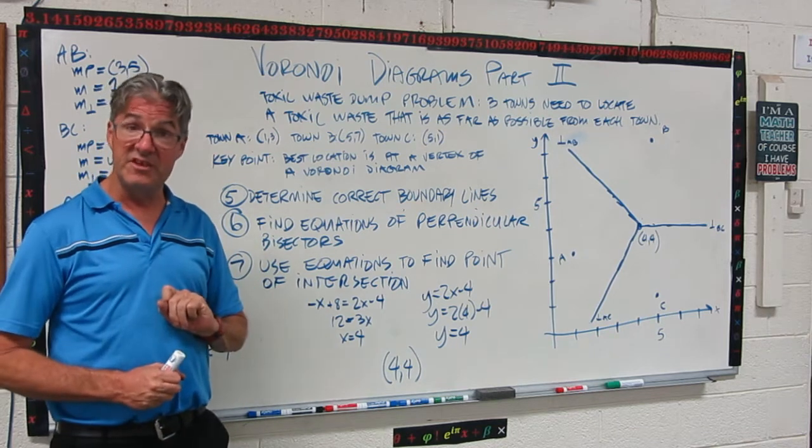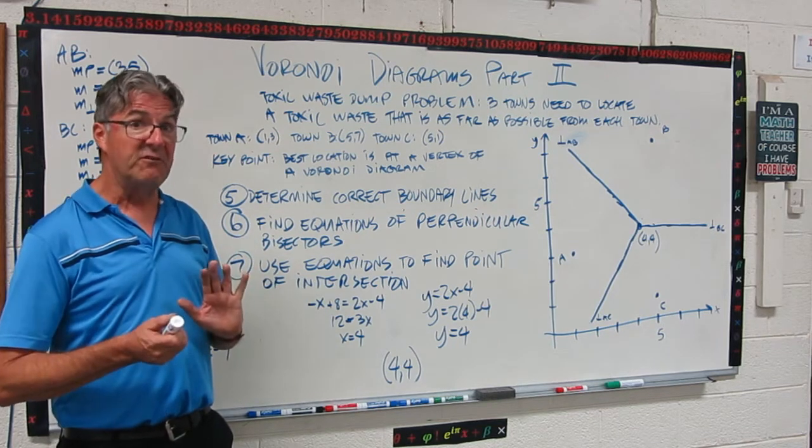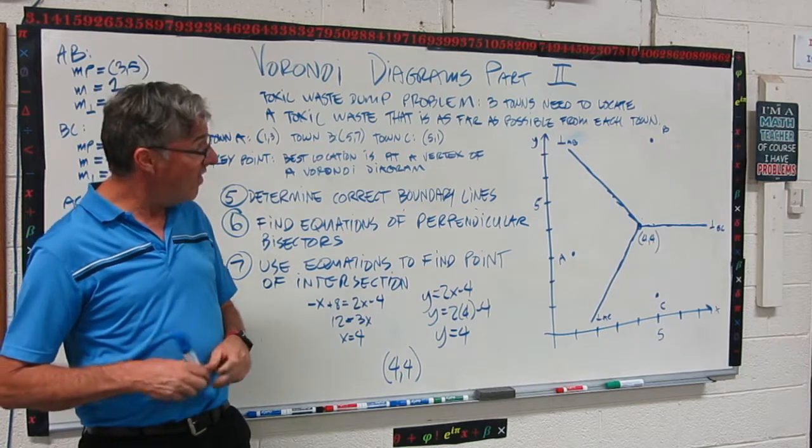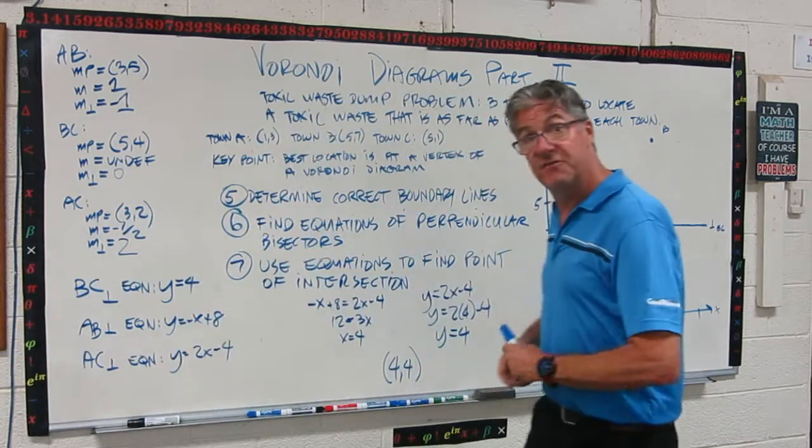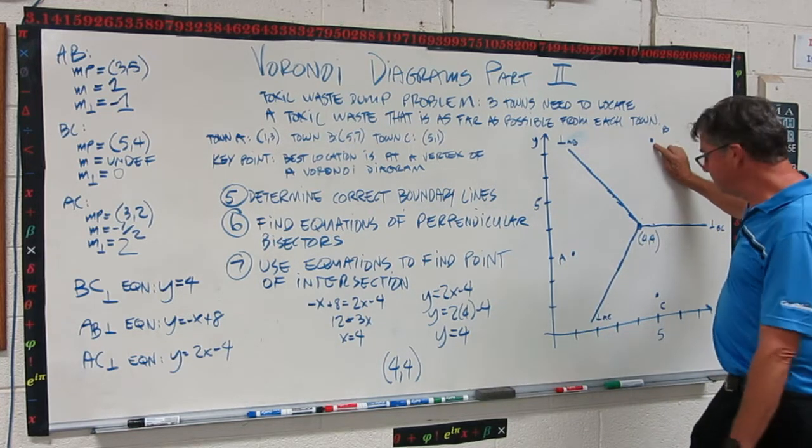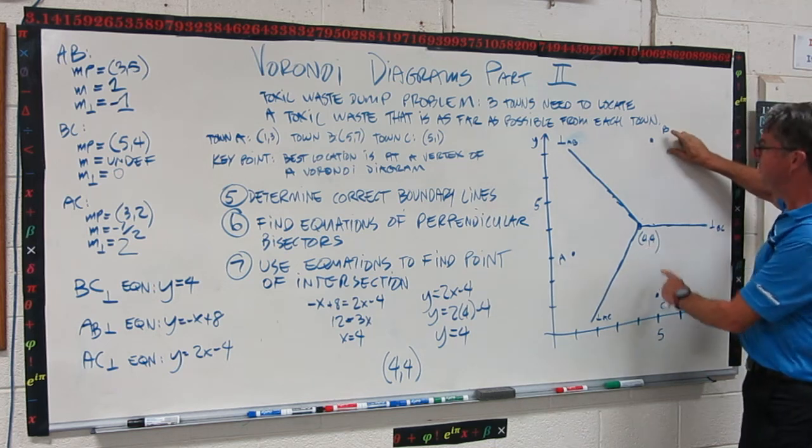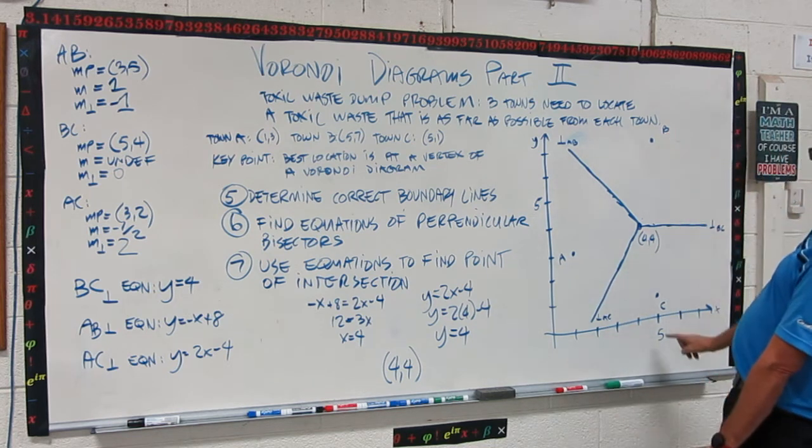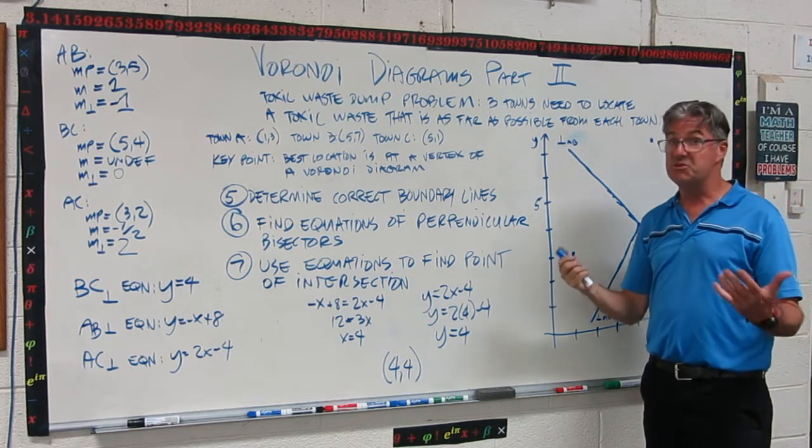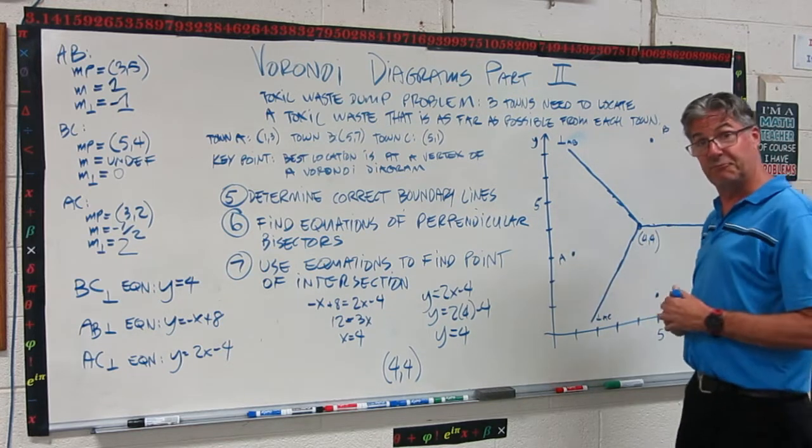Now, I'm not going to demo this problem, but be ready for it. You might be asked to find out how far from this point for the toxic waste dump, like town B might be. And you have the information. This is (4,4) and B was, B looks like B is (5,7). So you can just calculate the distance between those two points and that would show up.